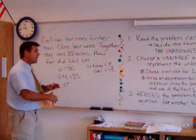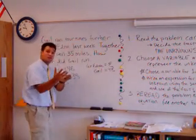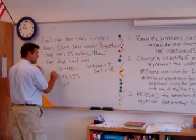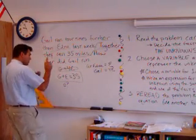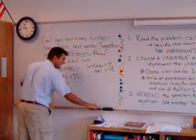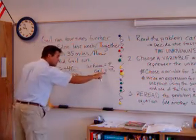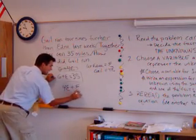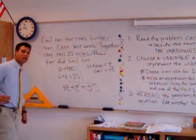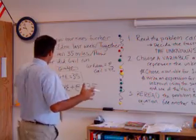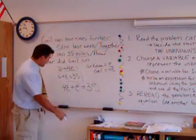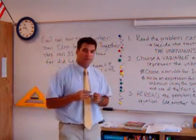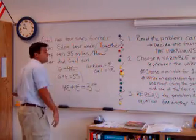Then I have to re-read and use another fact. I use this fact and use the other fact to write an equation. Here's the other fact: together they ran 35 miles. I already used the first fact. Let's use this fact to write an equation. I know Gail plus Edna will be 35. Gail is going to be four E. So: four E plus E equals 35. I have my equation. This is as far as we're going to go now. Later on, we're going to find out what E is, and then that will help us find out what G is. But we're not going to solve these problems yet — we're just writing them.